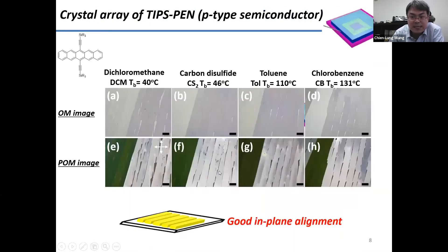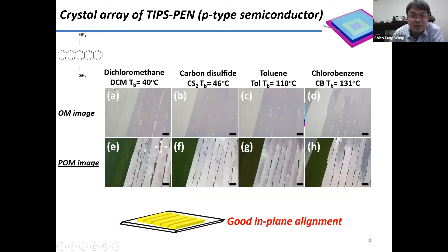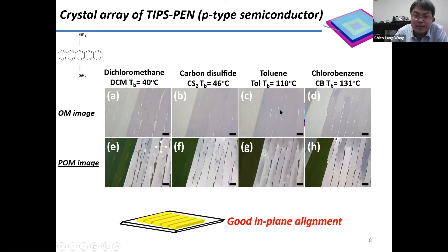After studying C60, we started thinking: now that our method works for n-type semiconductors, can we also use our PDMS-assisted crystallization method to grow crystal arrays of p-type organic semiconductors? So we started to prepare crystal arrays of TIPS-pentacene, which is a representative p-type small molecule semiconductor. We were again able to grow well-aligned crystal arrays of TIPS-pentacene.